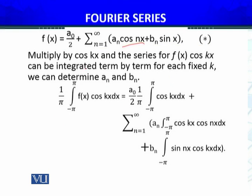The integral of sin(nx)cos(kx) for all n and k will be zero. So multiply by cos(kx), as I told you earlier. The series for f(x)cos(kx) can be integrated term by term. For each fixed k, we can determine a_n and b_n.